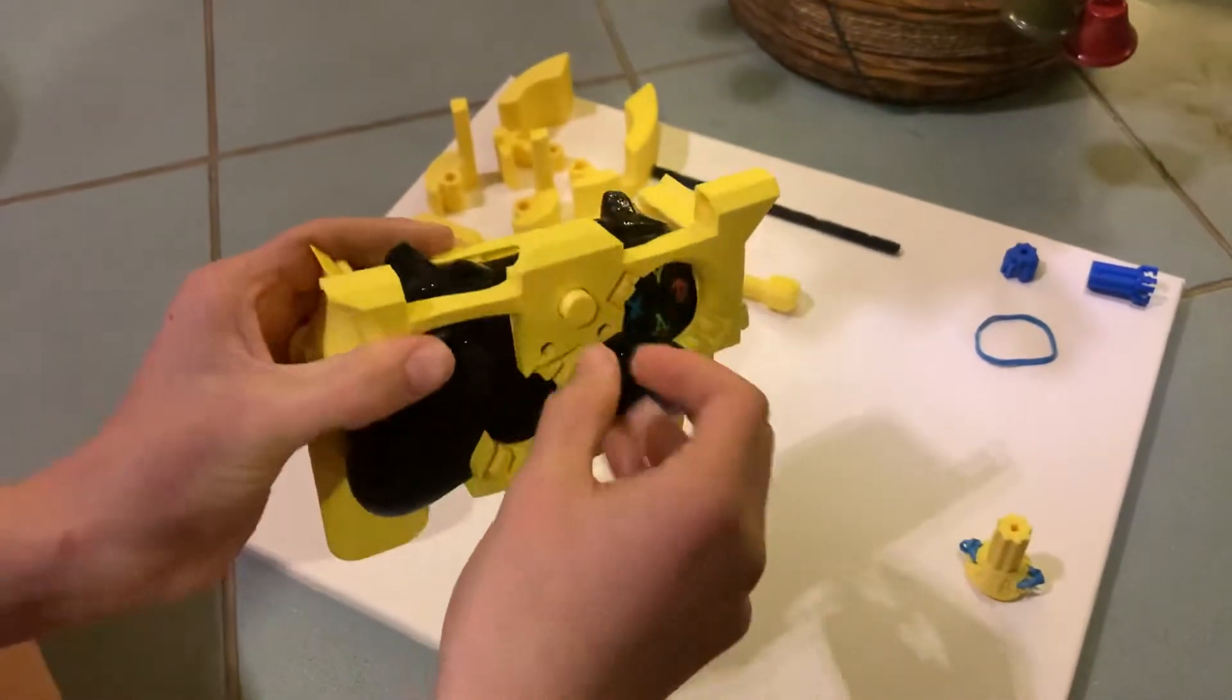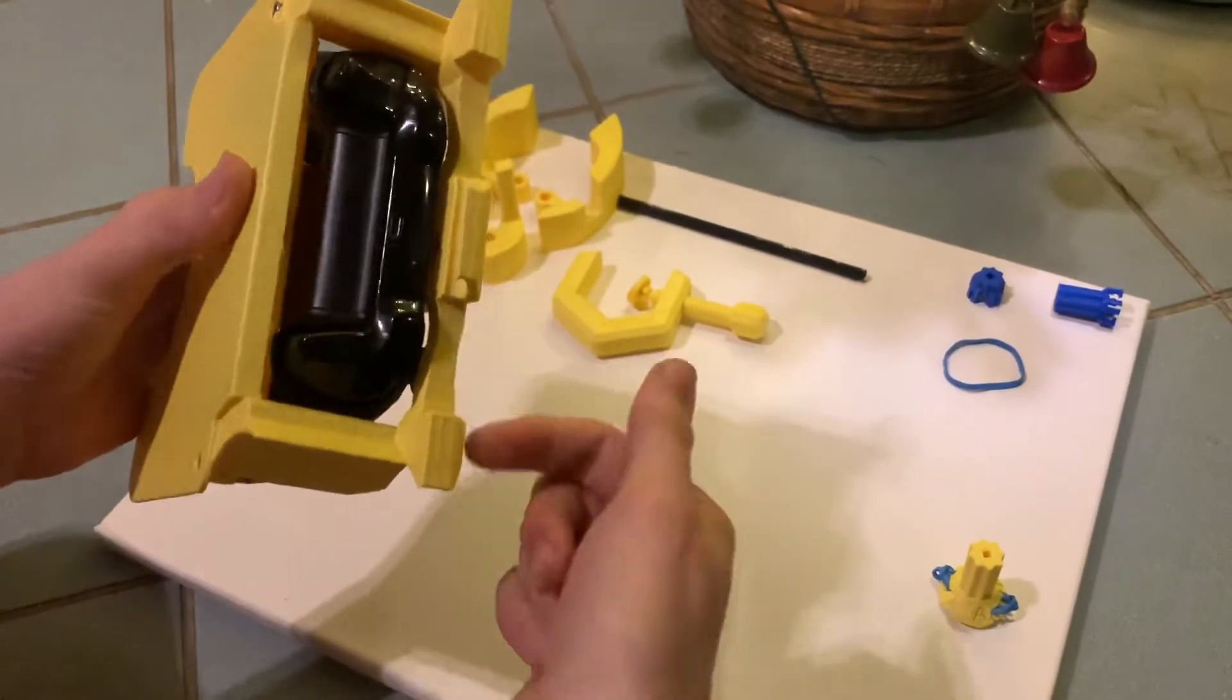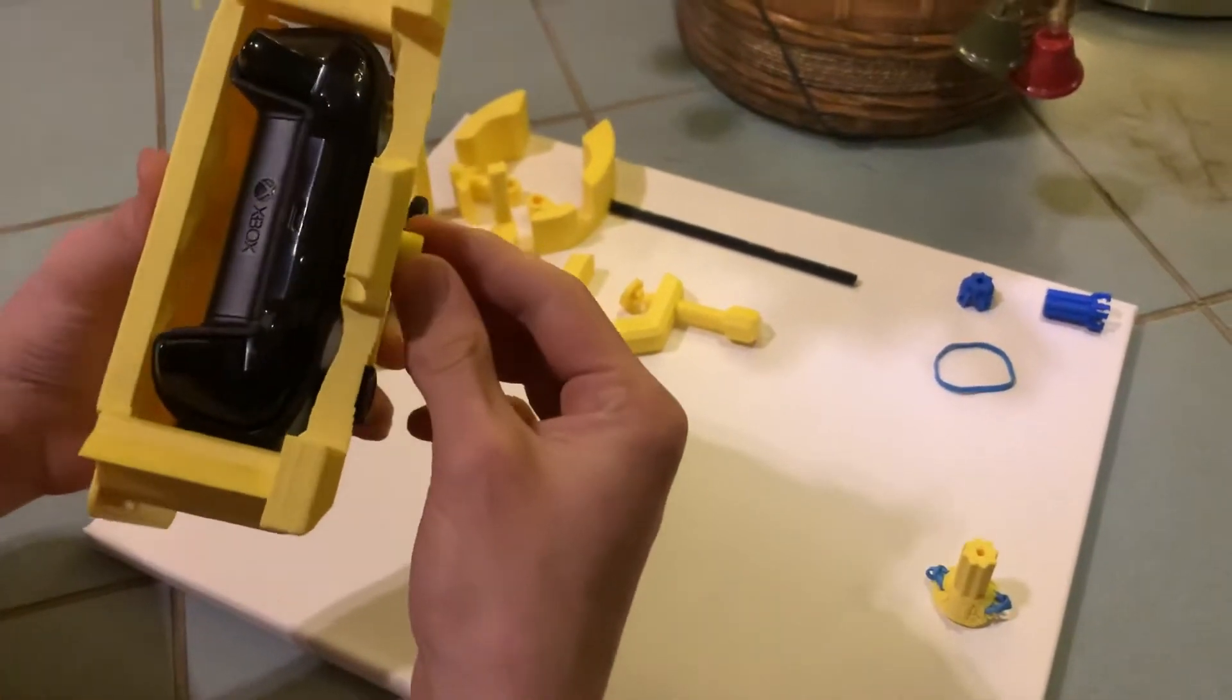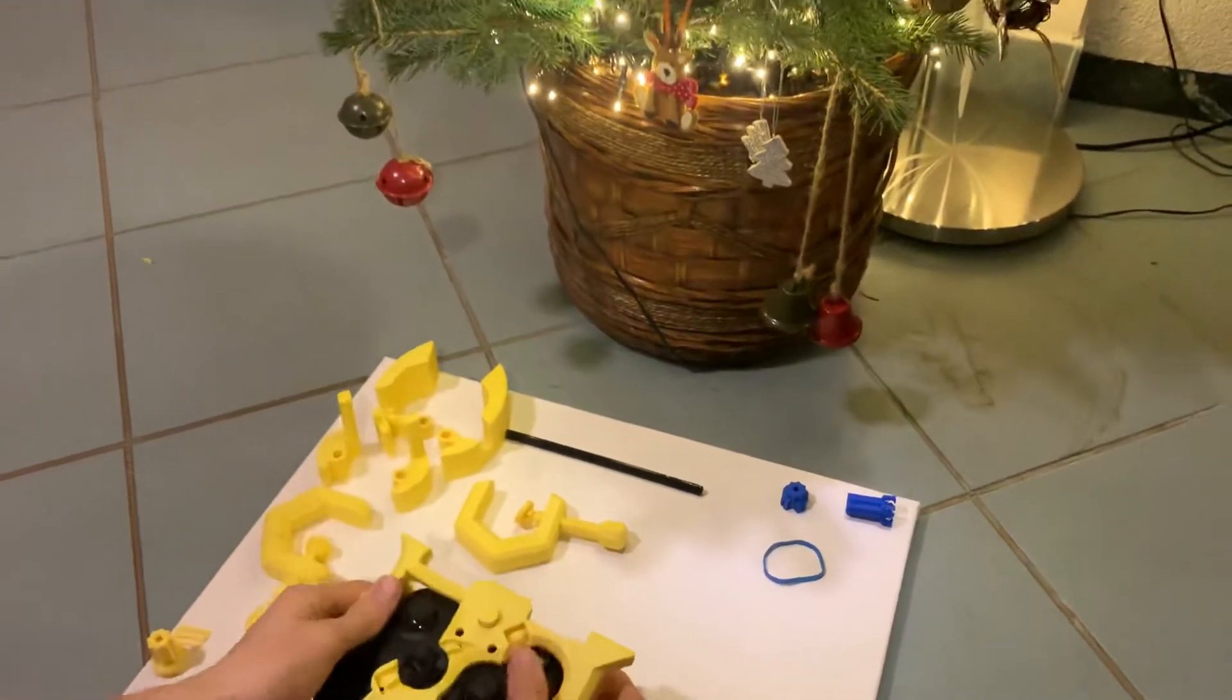Then, you want to take these little rods and put them through the bottom before it's screwed together so they don't fall out and they can press the Xbox logo and use the other buttons easily.